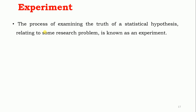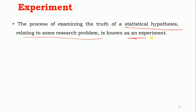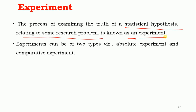What is meant by experiment? The process of examining the truth of a statistical hypothesis relating to some research problem is known as an experiment. If you are examining a statistical hypothesis relating to some research problem, that is called an experiment. Experiments can be of two types: absolute experiment and comparative experiment.